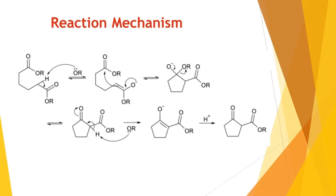The magic happens when a diester is deprotonated at the alpha position, forming an enolate ion. This enolate ion then undergoes a 5-exotrig nucleophilic attack, resulting in the formation of a cyclic enol. The key here is the deprotonation and subsequent attack, leading to the creation of a cyclic structure.